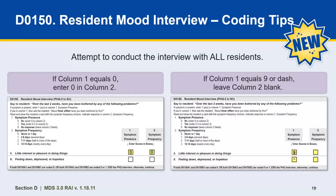New coding tips were also added to the guidance. It's important to attempt to conduct an interview with all residents. For coding: if column 1 equals 0, enter 0 in column 2; and if column 1 equals a 9 or a dash, leave column 2 blank. The screenshots reflect the coding for those three examples of 0, 9, or a dash.